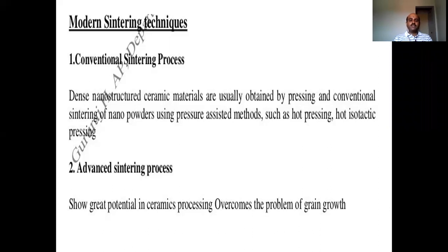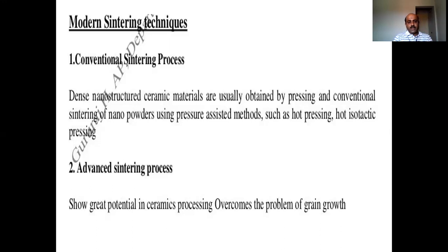Now let us move on to the modern sintering techniques. We have two different modern sintering techniques. One is called the conventional sintering process and one is called the advanced sintering process. In the conventional sintering process, dense nanostructured ceramic materials are usually obtained by pressing and conventional sintering of nano powders using pressure-assisted methods such as hot pressing and hot isostatic pressing.